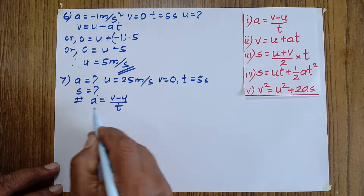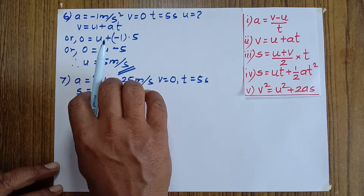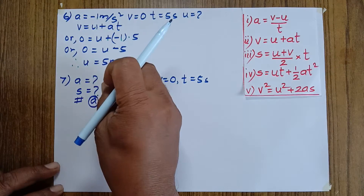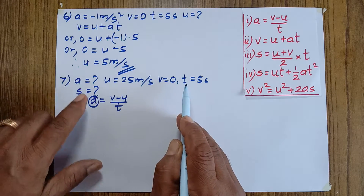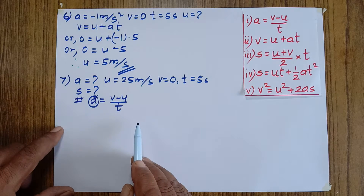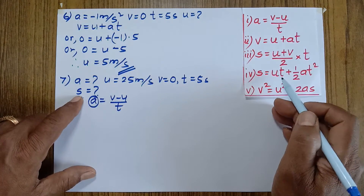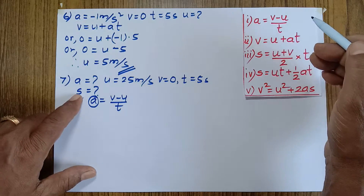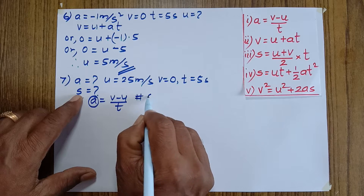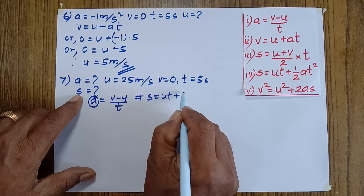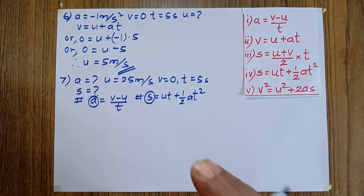Using a = (v − u) / t, acceleration can be calculated. After finding a, we now have all five quantities except s. To find distance s, we use the third equation: s = ut + ½at². This equation contains s and can be used to calculate distance.